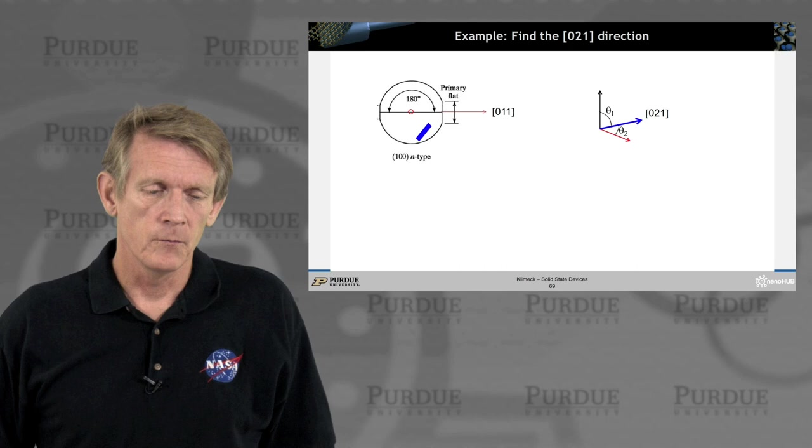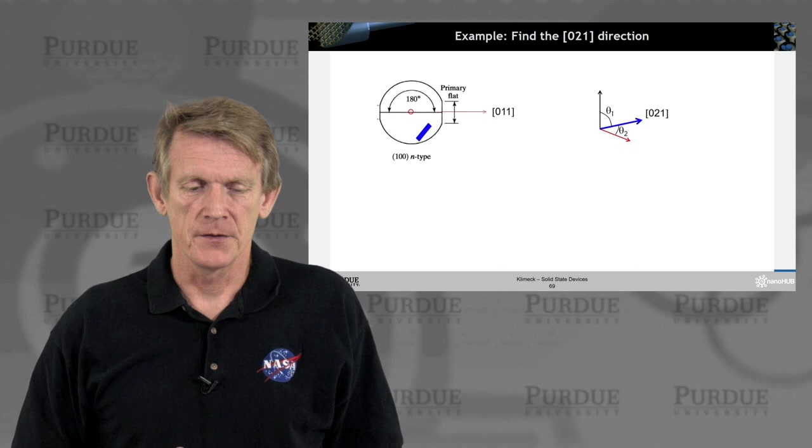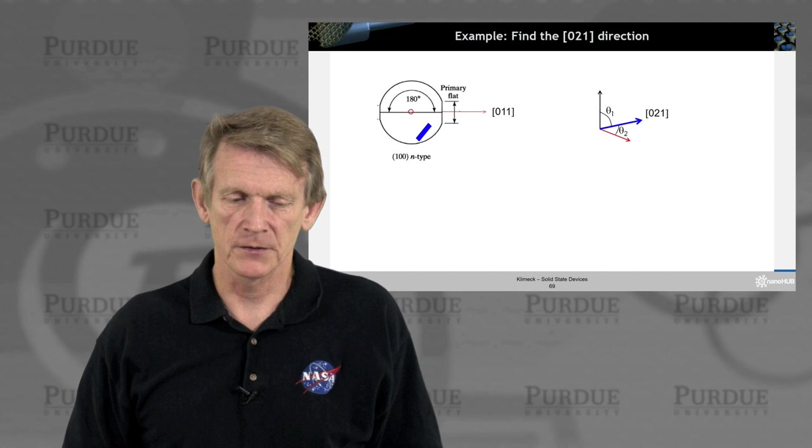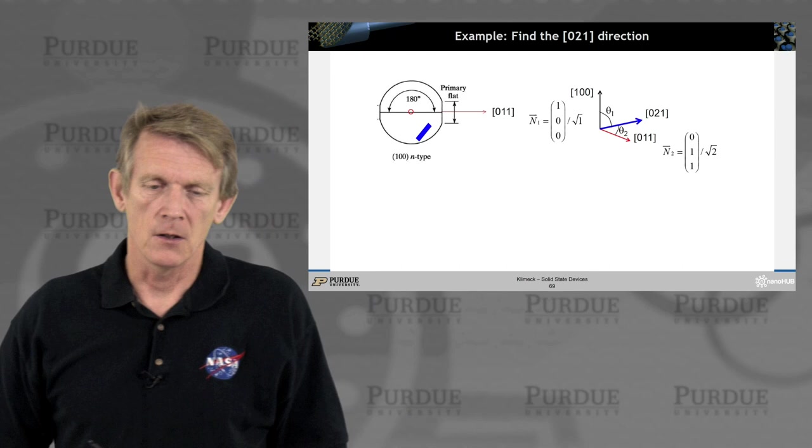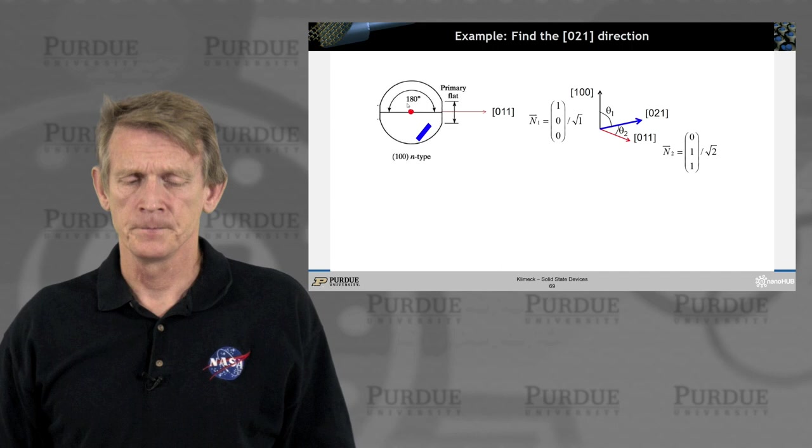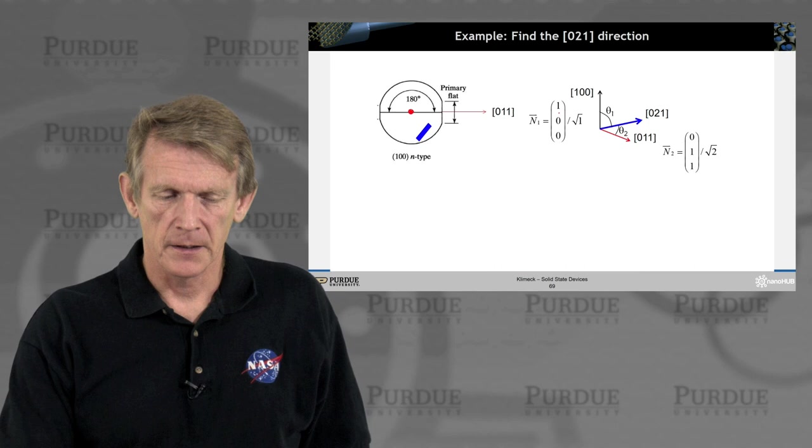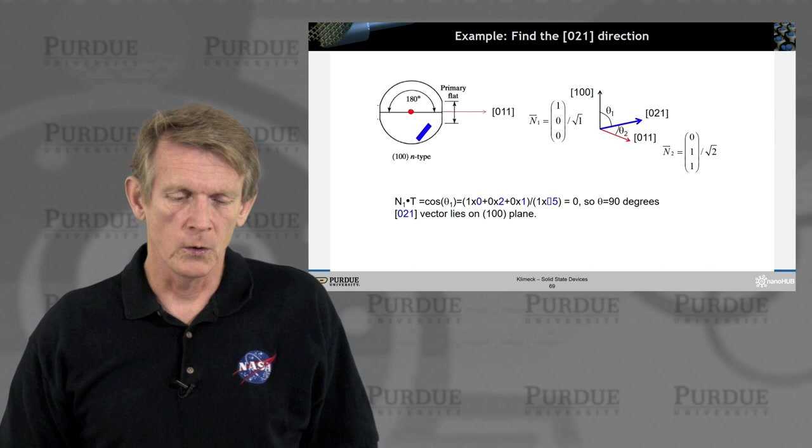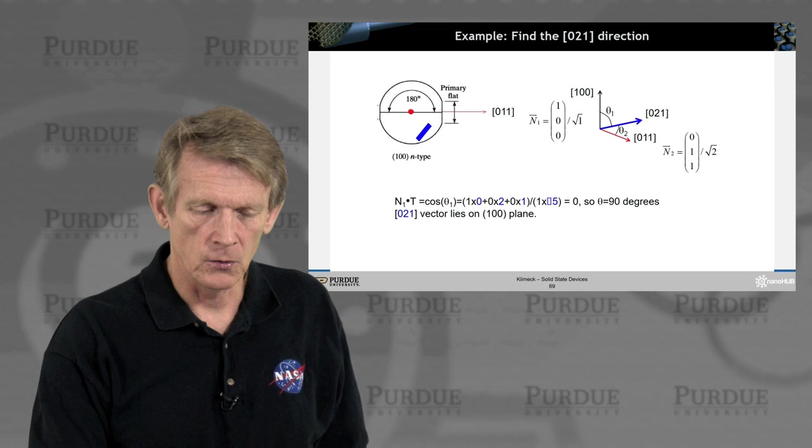Here's another example for a cell where we want to find the 0, 2, 1 direction on this silicon wafer. And we have a definition here of the 0, 1, 1 crystal direction. That has the long primary flat on this crystal. And we want to find the 0, 2, 1 direction. You follow the same path. You have N1 is the vertical one that's coming out of the plane here. So in the growth direction. And so N1 is 1, 0, 0. And again, we have the primary flat, 0, 1, 1 normalized by square root of 2. And we want to figure out where is the 0, 2, 1 vector.